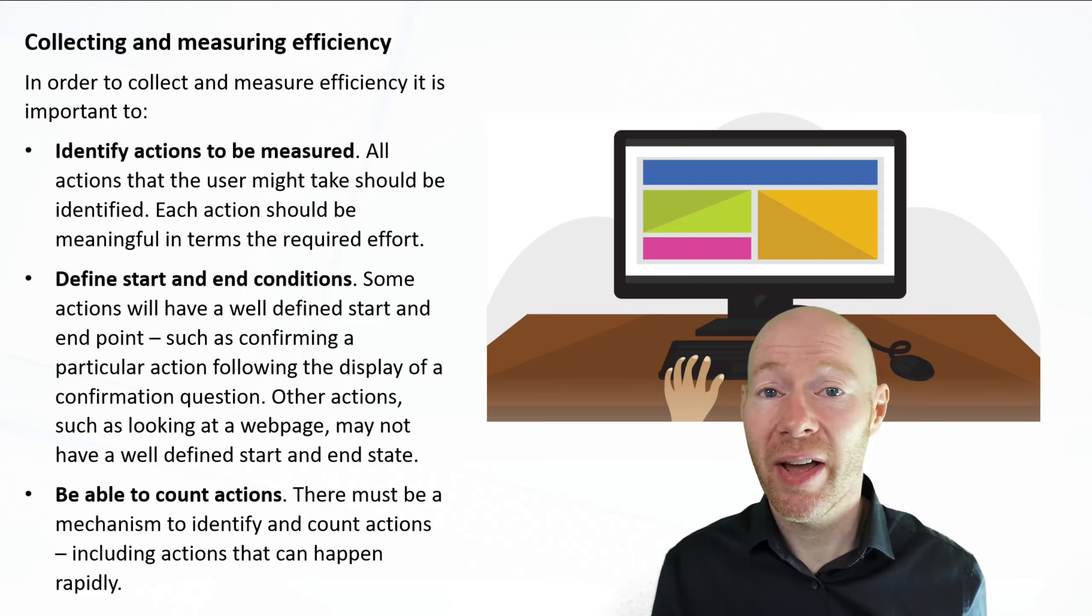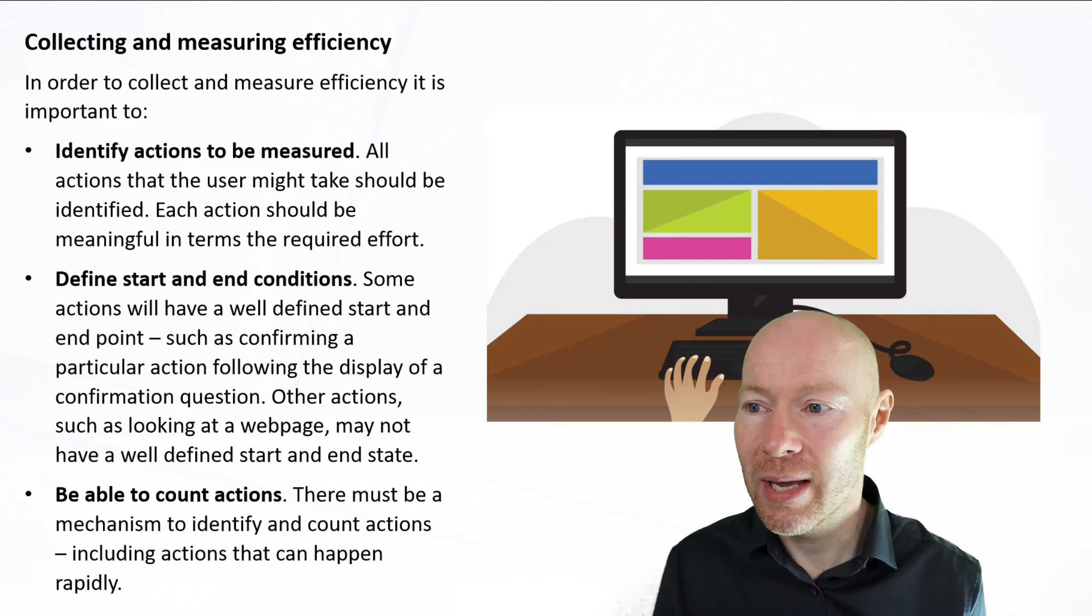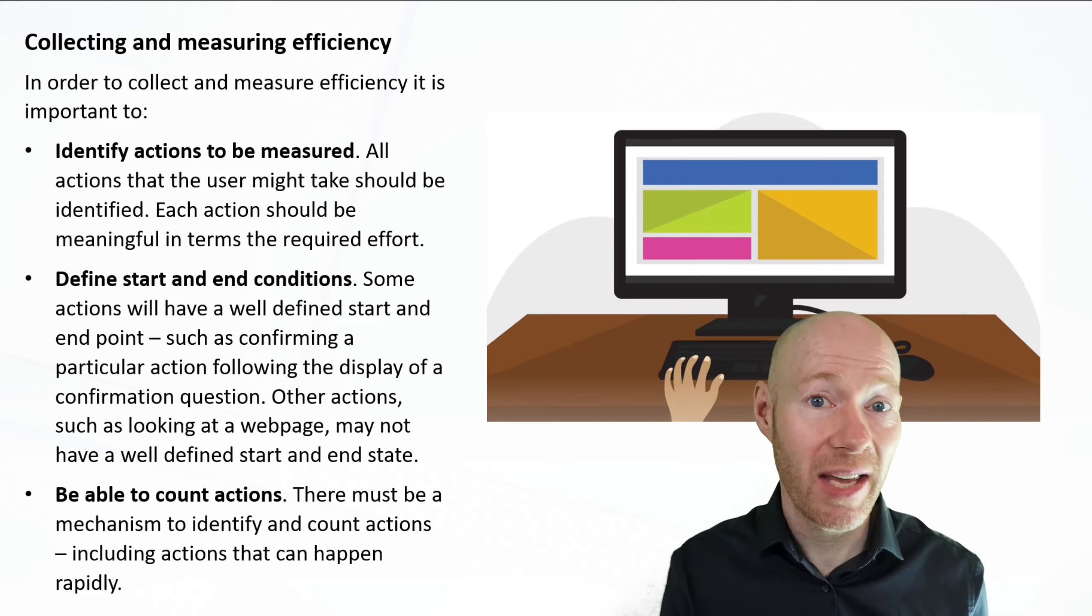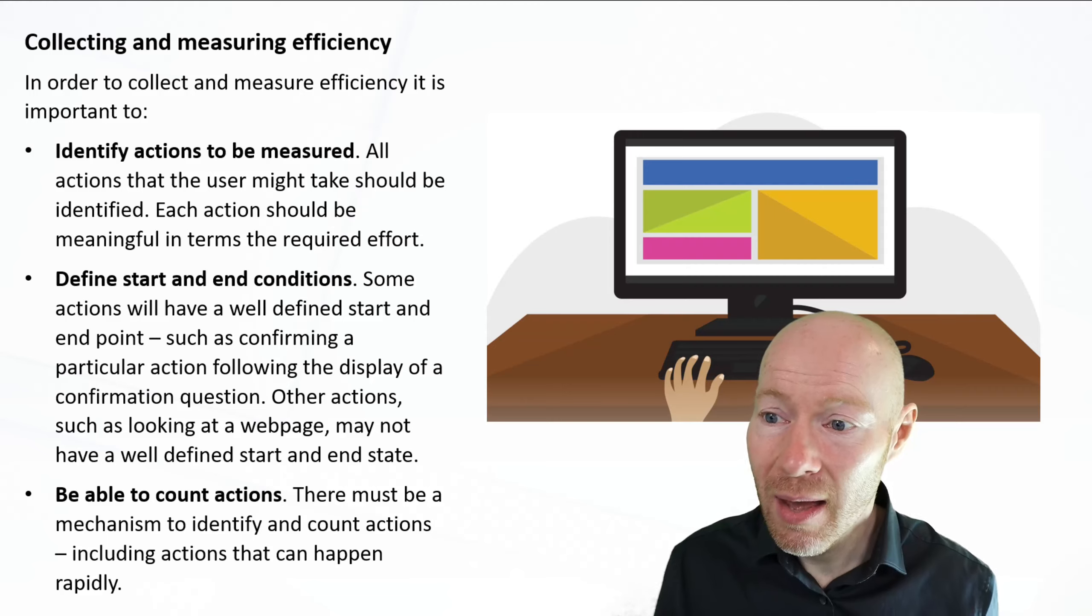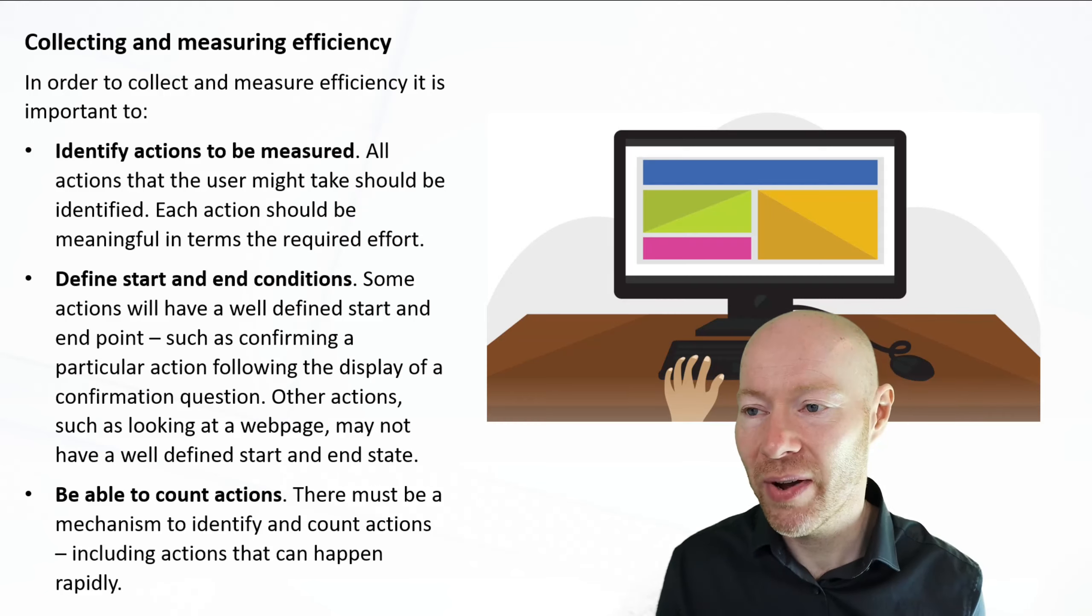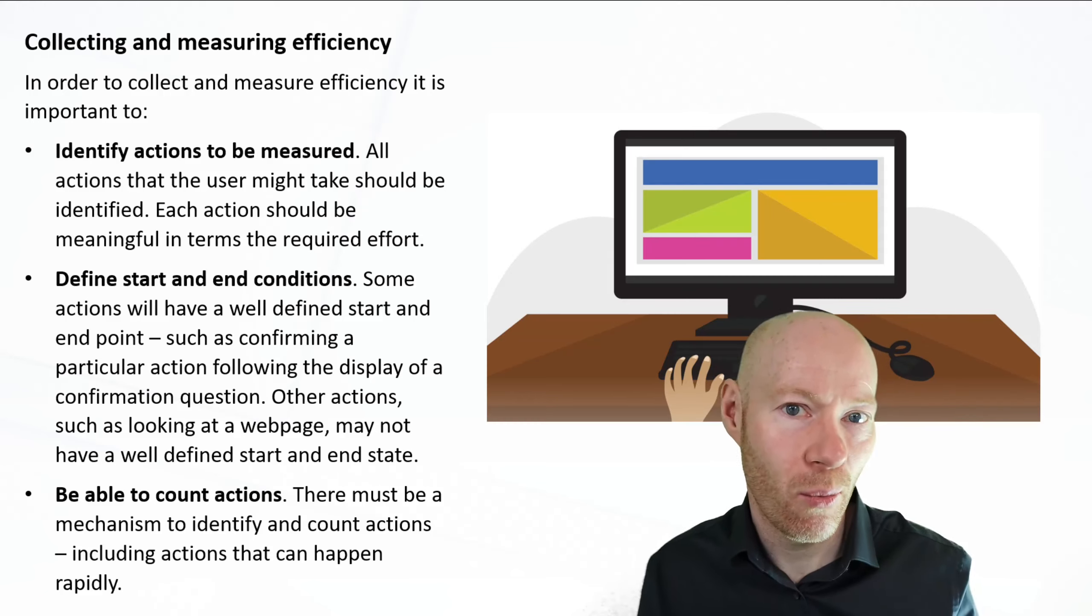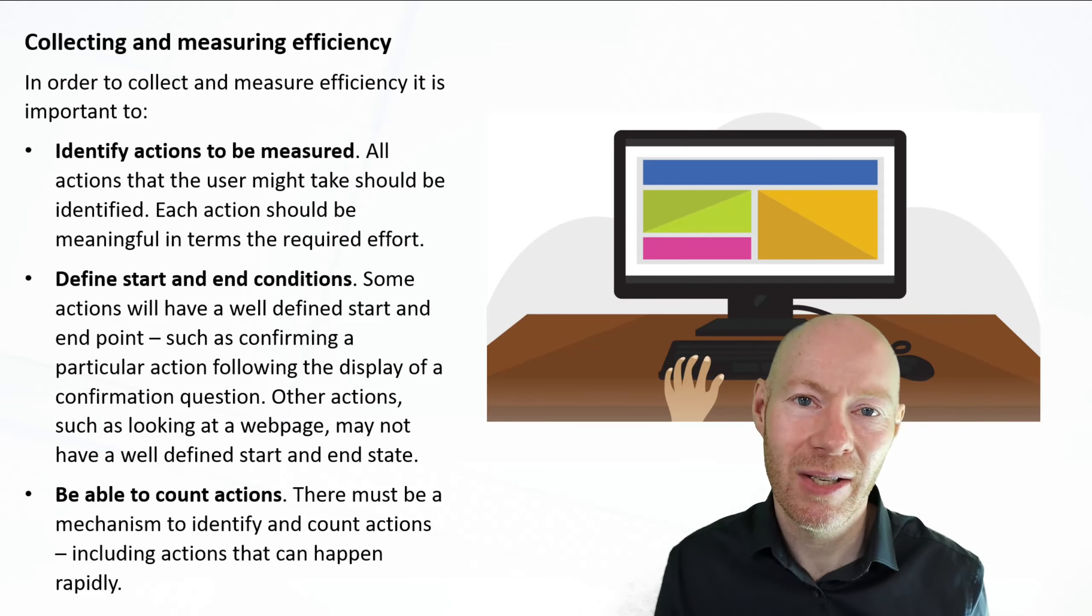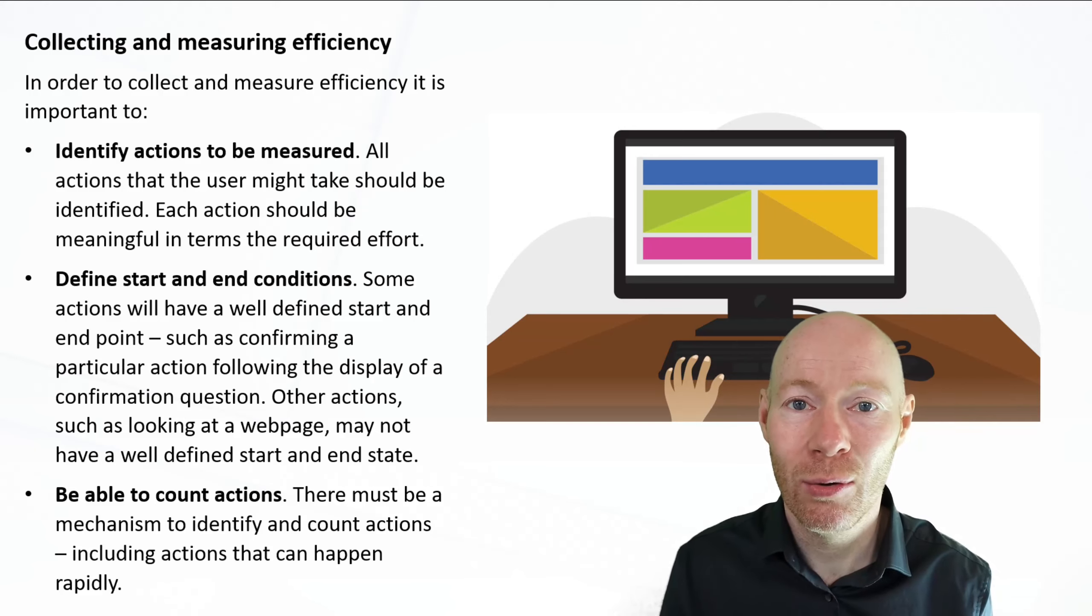It's really quite important we also define start and end conditions in terms of when we commence our measurement and when we complete our measurement, because that then defines the boundaries inside which we will be counting the number of actions. And that sometimes is really quite straightforward. We display the page and we start counting number of actions. Whenever the user hits submit, it's the end of the page. In other cases, it may be less tangible. So that if we display a web page and we're expecting the user to look for some information through that, we don't know necessarily when they will start that process, when they will finish that process, what other aspects might they do through that.